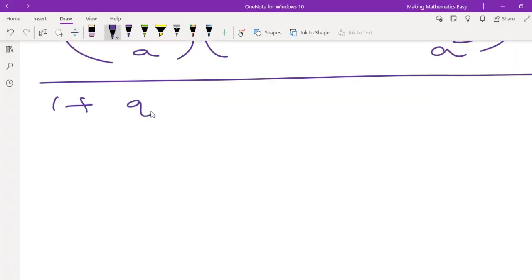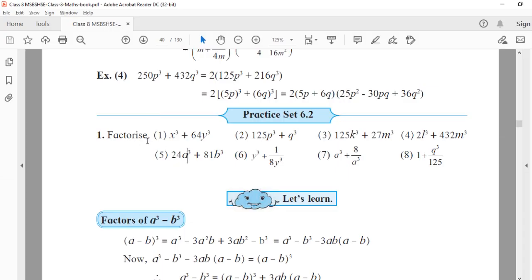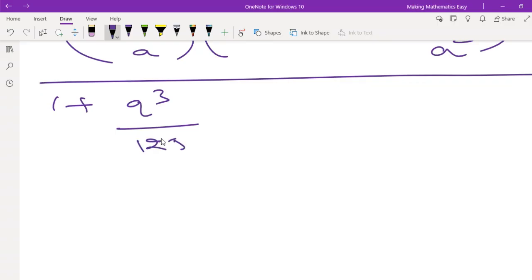Hello students, welcome back to my channel. Let's move on to the last problem of this exercise. This is 1 plus 125, which is nothing but 1 plus q cubed. The cube root of 125 is 5, so this will be q upon 5, the whole cube.